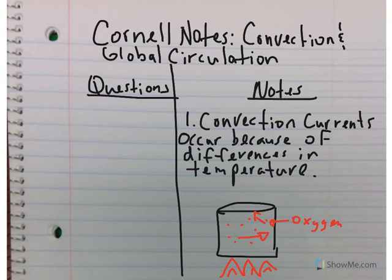This idea of hot things moving around, especially moving upwards — the atoms will try to move everywhere, up in every direction, but mostly up — is called convection. Underline this word in your notes. Convection is when the differences in temperature make things move around.